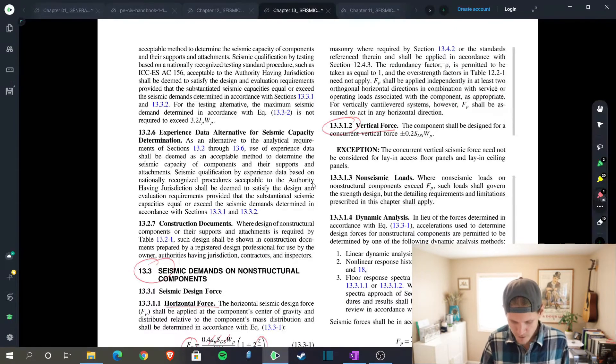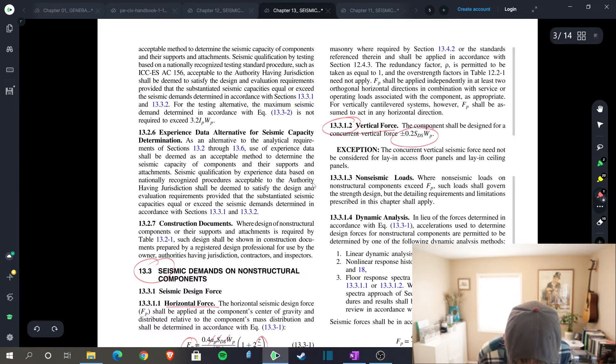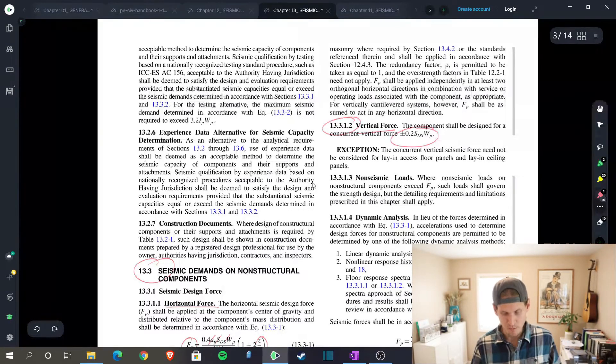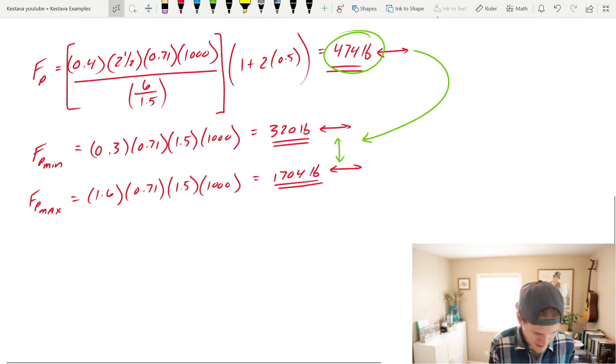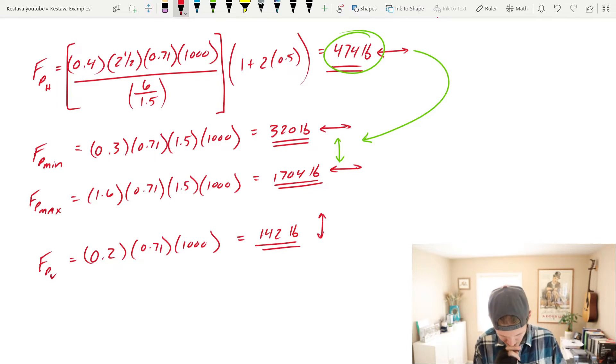And simply, for vertical force, the component shall be designed for a concurrent vertical force of plus or minus 0.2 SDS weight of your unit. Let's go plug that in. Since we're back here, I'm actually going to slap on a little H to our FP force. That's horizontal. And then we're finding FP vertical, just to keep everybody super clear here. That equals 142 pounds. And that's in the vertical direction, up and down.